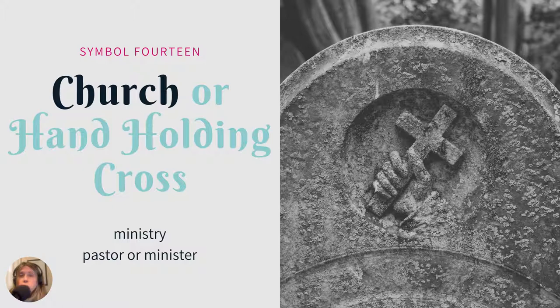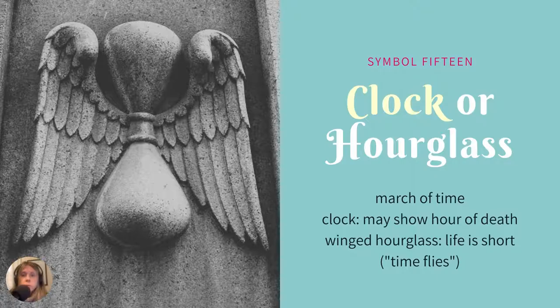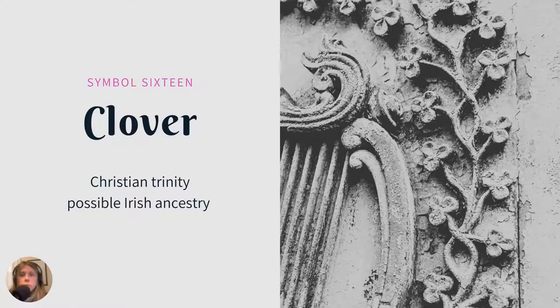A church or a hand holding a cross — the church examples I found were fairly modern. This looks like an older example of someone who was very passionate about ministry, or possibly a pastor or minister. Clock or hourglass — just the march of time. This example of a winged hourglass has been around a long time; there are examples from Pompeii mosaics. Time flies, life is short. I also found examples of clocks carved at the hour of death, and I linked to a gentleman's blog post covering some beautiful examples from New England.